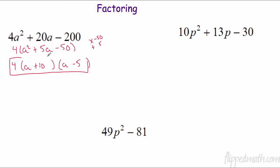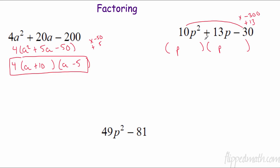For this one — 10, 13, and 30 — there are no common factors. I'm going to factor using the AC method: I need two numbers that multiply to negative 300 and add to 13. That's positive 25 and negative 12. I put 10p in front. I can take a factor of 5 out of 10 and 25, giving 2p + 5. And I take a factor of 2 out of the other group, giving 5p − 6. So the answer is (2p + 5)(5p − 6).